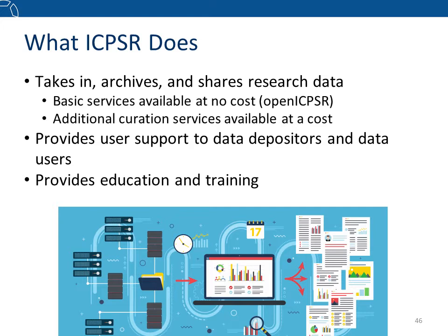The second option is to add ICPSR's curation services, which come at a cost to the researcher but still at no cost to secondary users. Data curation means that ICPSR will enhance your data for usability, in addition to the basic services of archiving and sharing. Both ICPSR's free services and curation services will satisfy the data sharing requirements in the ACL Public Access Plan, and are covered in more detail in later slides.